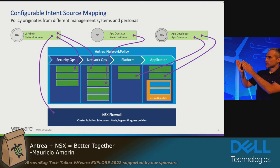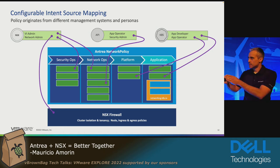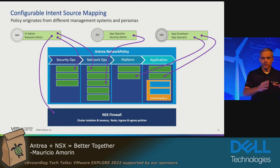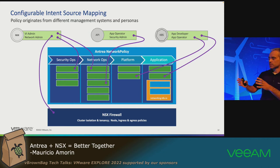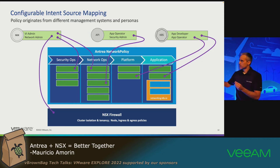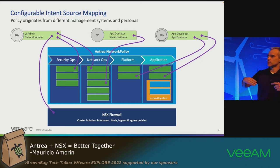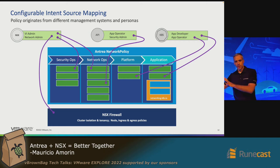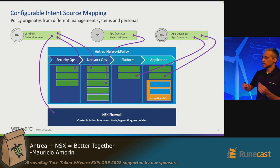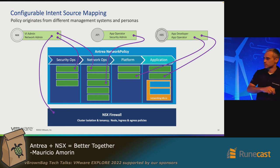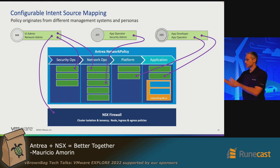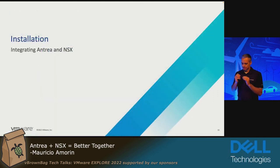This enables different types of policy for your cluster. For example, your app developer can focus on policy inside the application, your security admin can focus on a different type of policy such as between clusters, and your VI admin or network admin can handle yet another type of policy. You can have different views with each role doing configuration and visibility in different parts of your environment.